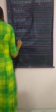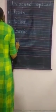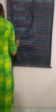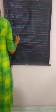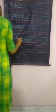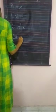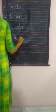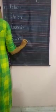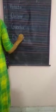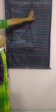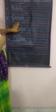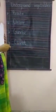Fourth one is carrot — matlab gajar. C-A-R-R-O-T. Carrot. So underground vegetables are: potato, onion, garlic, and carrot.